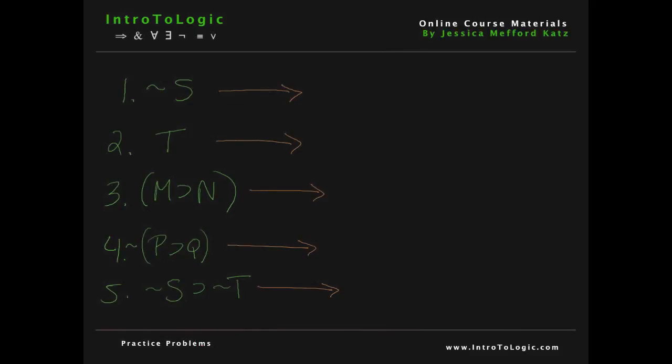For lines 1 through 5, take a minute to ask yourself what is the negation of each sentence. Pause the video if you need to. For number 1, what is the negation of 'not s'? The negation is 'not not s'. Notice that we just take the original sentence, which is 'not s', and add a negation in front of it. For number 2, what's the negation of t? Not t.